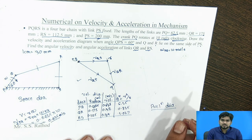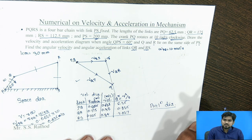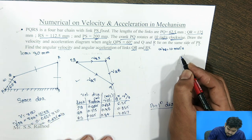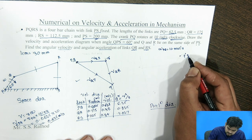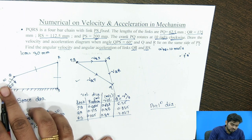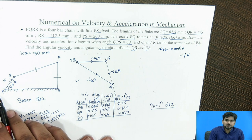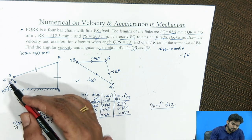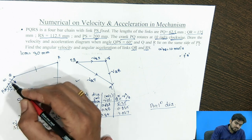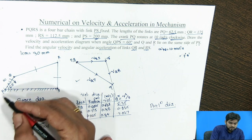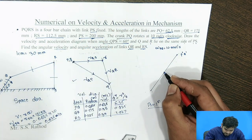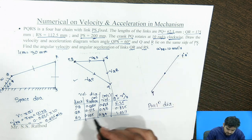For drawing the acceleration diagram, each link has two components: radial and tangential. First, consider one point at which acceleration is zero — P and S are fixed points, so we mark it as P'. Link PQ rotates with uniform angular velocity, so it has only the radial component of 6.25. This radial component is parallel to the link, so from point P' we draw the radial component in the downward direction, giving us point Q' with magnitude 6.25.